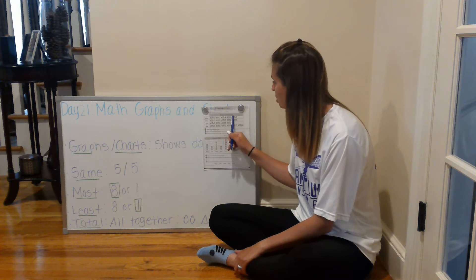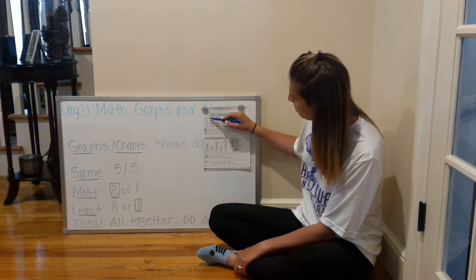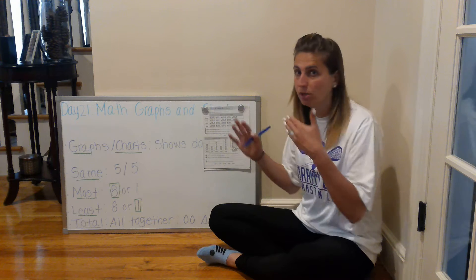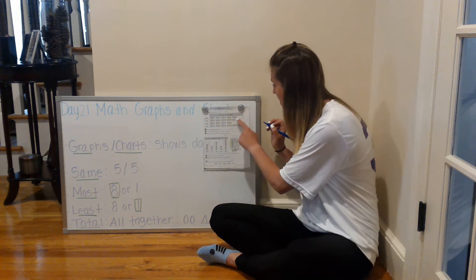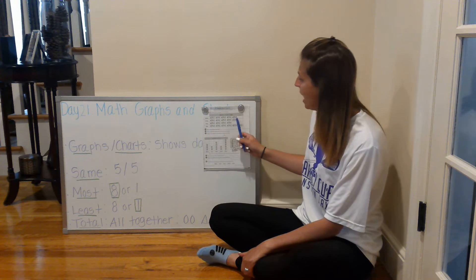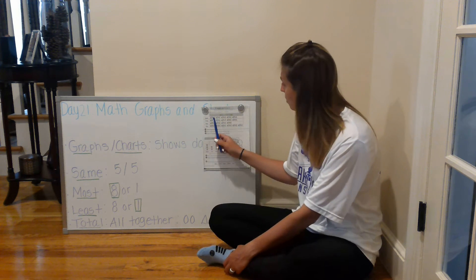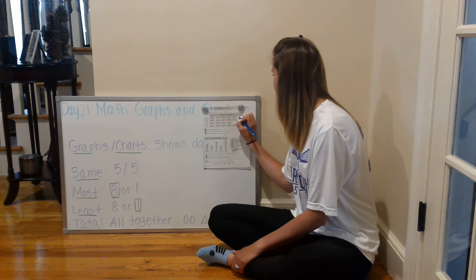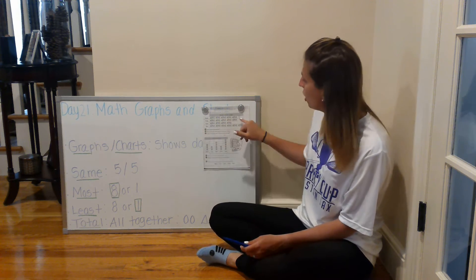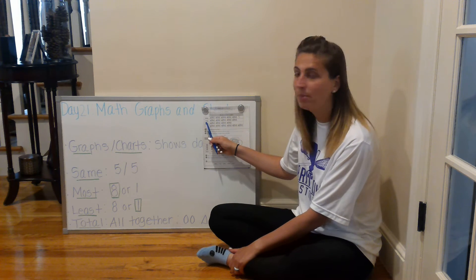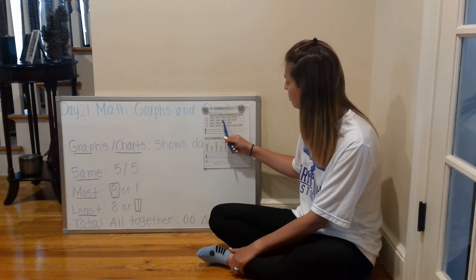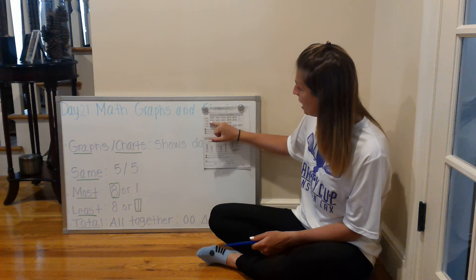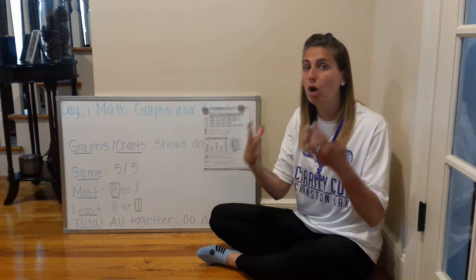The title of this chart is 'Number of Fishes Caught.' On the side it has four names: James, Craig, Rosa, and Tony. Each fish represents how many that each person caught, and we're going to write the number at the end. Let's count how many fishes James caught: one, two, three, four, five. James caught five fish. Let's count Craig's fish: one, two, three, four, five. So James and Craig caught the same amount of fish — they both caught five fish.